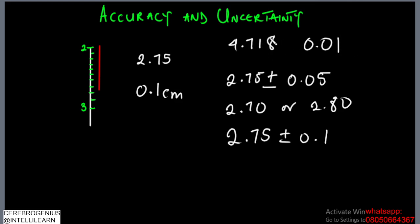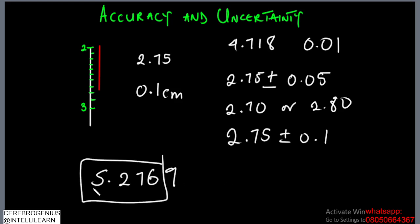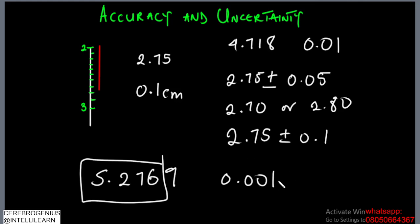For example, if you measure a value of 5.2768 or 5.2769, the accuracy is found by changing all preceding digits to zero down to the last sure digit and placing a 1 there — giving 0.001. Note that 0.001 is the accuracy, not the uncertainty. The uncertainty is half of the accuracy. You use ± to represent it. Following similar procedures, you can find the accuracy of a Vernier caliper or any other measuring instrument.